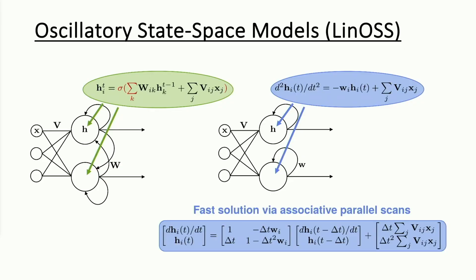Our solution is what we call oscillatory state space models, or LINOS — Linear Oscillatory State Space Models. On the left in green, you can see the recurrence of a standard Recurrent Neural Network (RNN). We have an input time series X and a hidden representation H, updated recurrently based on the input sequence, with very dense weighted connections between neurons — each hidden neuron connected to every other hidden neuron.